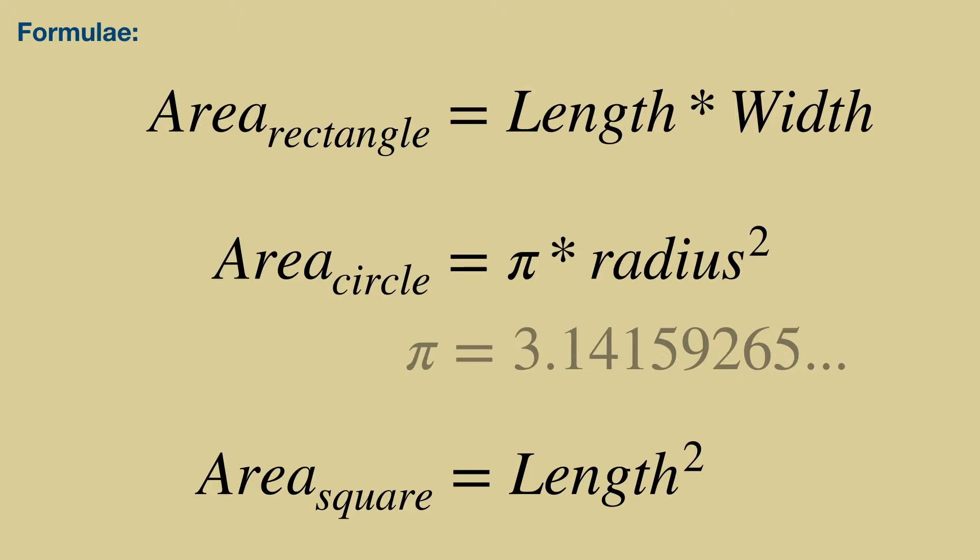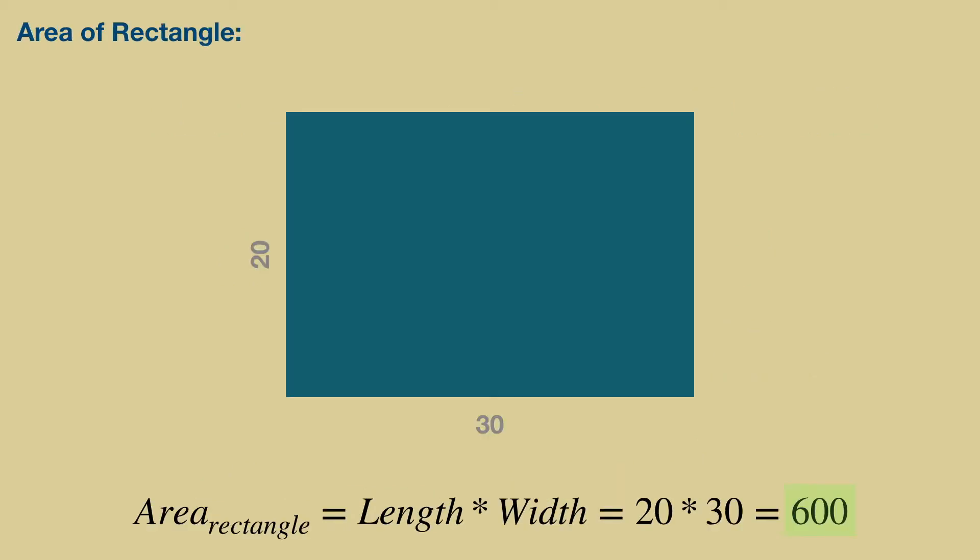Here's a formula we will be using to solve this problem. The area of rectangle is length times width. And the area of a square is just the length of the side squared. So we can start solving for the area of the rectangle, which is simply 20 times 30, which is 600.